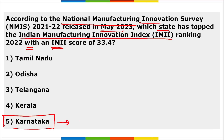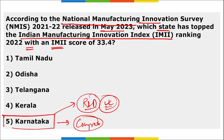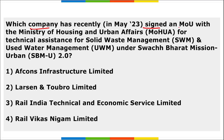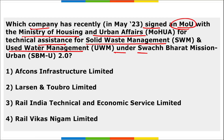Karnataka recently held state elections and Congress won with the maximum number of seats. Karnataka is also the best state for research and development. RITES — Rail India Technical and Economic Service Limited — signed an MOU with the Ministry of Housing and Urban Affairs for technical assistance in solid waste management and used water management under Swachh Bharat Mission Urban 2.0.